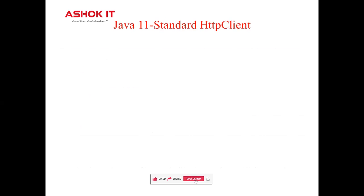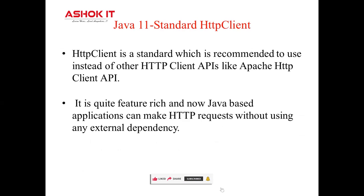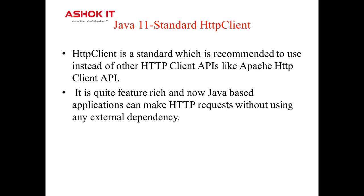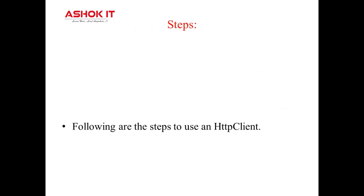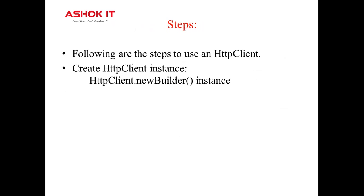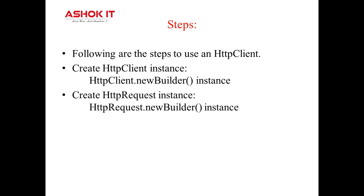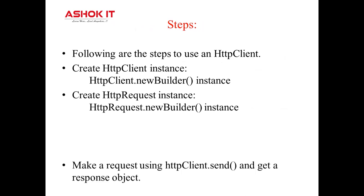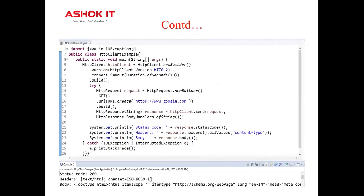The next Java 11 feature is the standard HTTP client. With Java 11, the HTTP client is now standard and it is recommended to use instead of external HTTP client APIs like Apache HTTP client. It is quite feature-rich, and now Java-based applications can make HTTP requests without using any external dependencies. The steps are: create an HTTP client instance using HttpClient.newBuilder(), create an HTTP request using HttpRequest.newBuilder(), and make the request using HttpClient.send() to get a response object. It returns the status code, headers, and body.